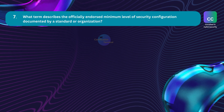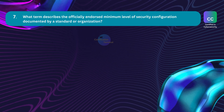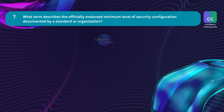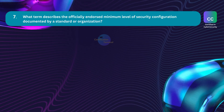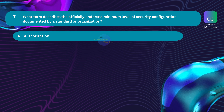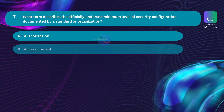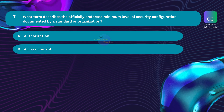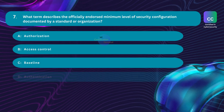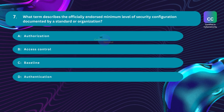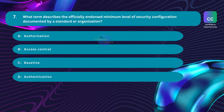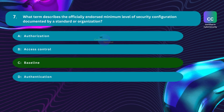Question number seven: What term describes the officially endorsed minimum level of security configuration documented by a standard or organization? Option A: authorization. Option B: access control. Option C: baseline. Option D: authentication. The correct answer is Option C — baseline.